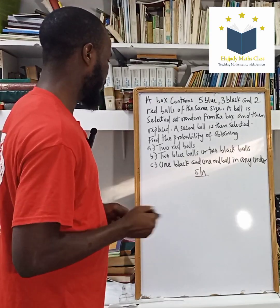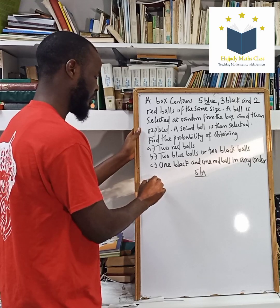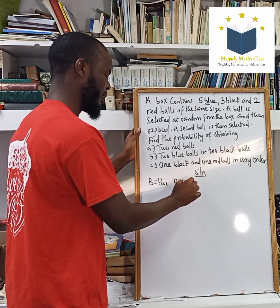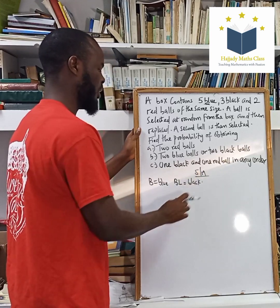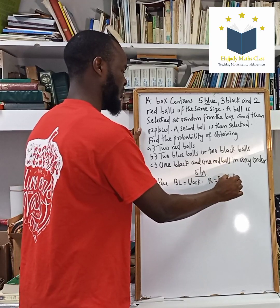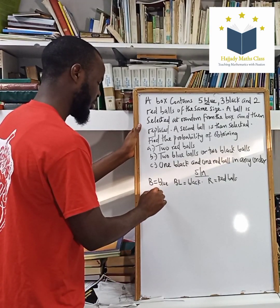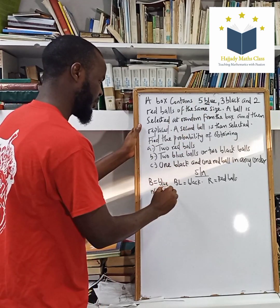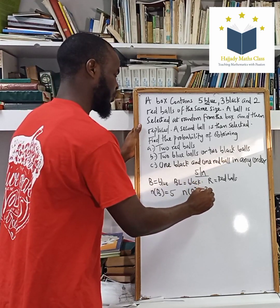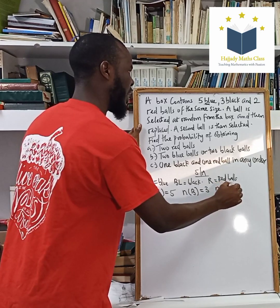Now to break this down, let's talk about the number of balls we have here. Let B represent blue balls, let BL represent black balls, and let R represent red balls. The number of blue balls we have is five. Number of black balls, we have three. And number of red balls, we have two.